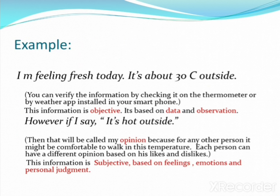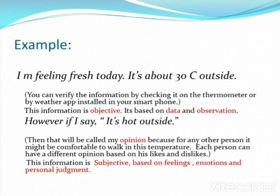For example, if I have written something on the board saying 'It is about 30 degrees Celsius outside,' you can verify this information by checking it on a thermometer or through a weather app on your smartphone. This information is objective — it is based on data and observation.